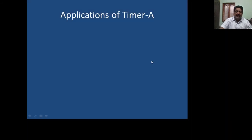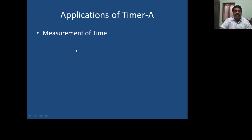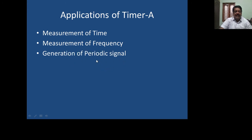This is about the block diagram and features of Timer A. Timer A is employed in several applications: it is used to measure time by measuring the duration of a pulse over the elapsed time; measurement of frequency is also possible; generation of a periodic signal can be done using the output mode; and pulse width modulation — where the width of the pulse depends on the information or message provided.